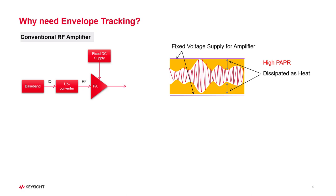These waveforms have an amplitude element to the modulation, and this needs to be preserved. To achieve this, the amplifier must be able to accommodate the peaks without distortion. This means the signal must be within the linear region of the amplifier. In fact, the peak-to-average power ratio, or PAPR, is the key to the efficiency level that can be achieved.